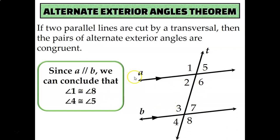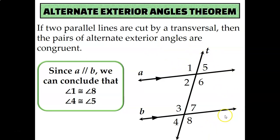The same thing applies to each pair of alternate exterior angles. They're the same idea as alternate interior, except they are on the outside of line A and line B, like angle 1 and angle 8. So in this diagram, angle 1 would be congruent to angle 8, and angle 4 would be congruent to angle 5.